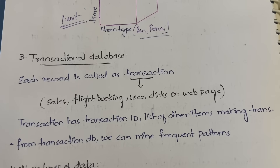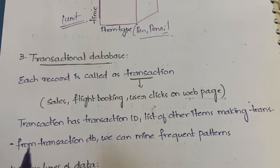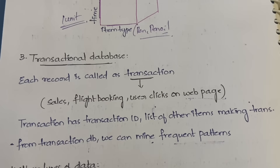After data warehouse, we have transactional database. Transactional database is similar to the previous two types, but here each record or attribute is referred to as a transaction. A transaction could be customer sales, flight ticket booking, or user clicks on a webpage — how many times a user clicked on a particular banner or advertisement. A transaction will have a transaction ID and a list of all items making up that transaction: name, start time, end time, date, location, and all details. From the transaction database you can mine frequent patterns — patterns which are occurring frequently.